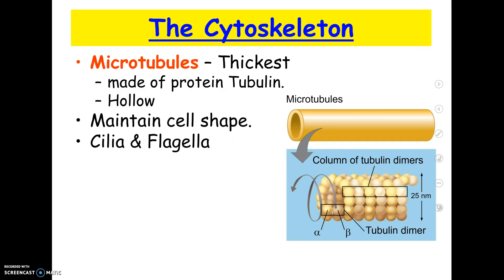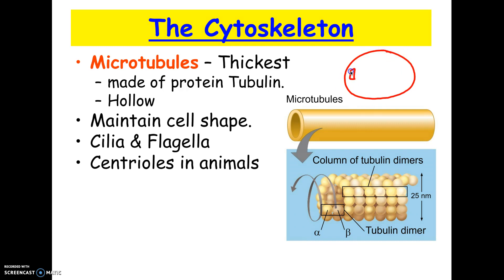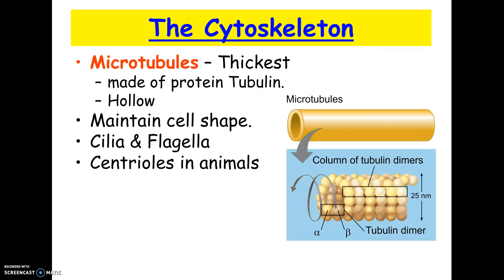Microtubules hold the cell shape and form cilia and flagella. They also form what are called centrioles in animals. Centrioles are involved when a cell is dividing. If you remember mitosis, the microtubules form to pull the chromosomes apart, and there were these little T-shaped things at the end — those are the centrioles. Plant cells don't have those, but animal cells do. The movement of chromosomes — what moves them to the middle during mitosis and pulls them apart — that's microtubules.